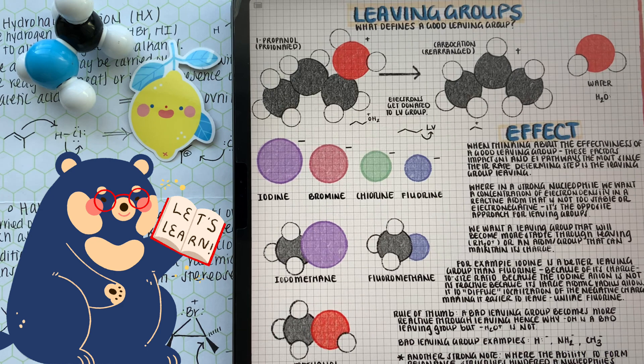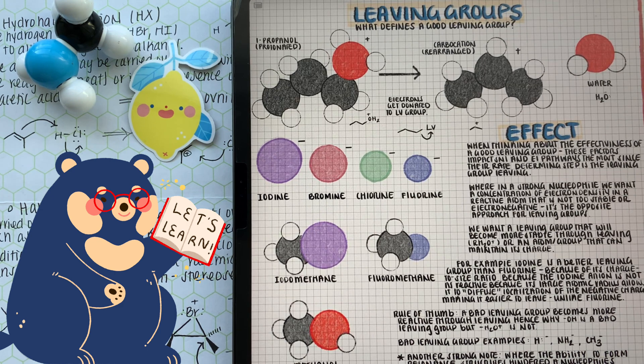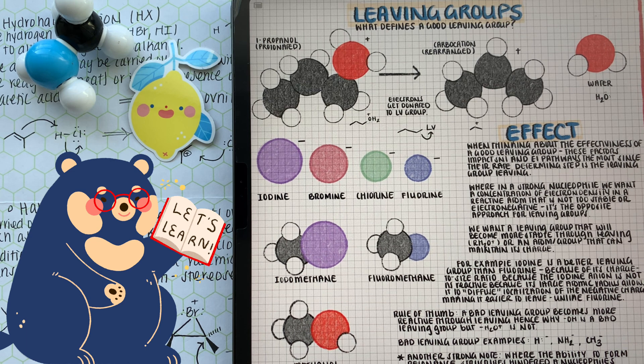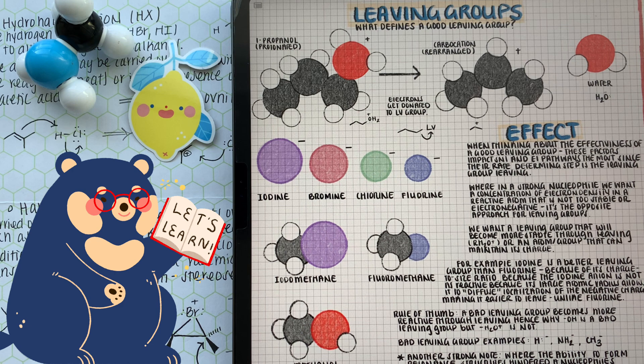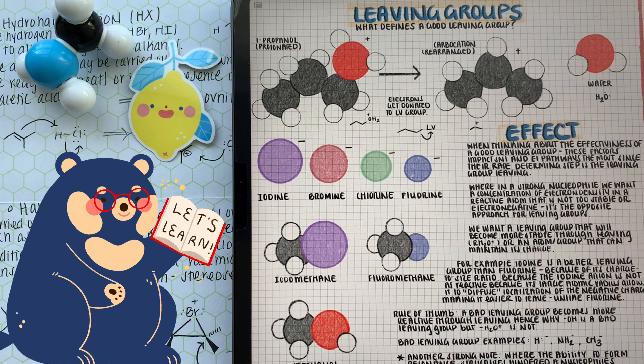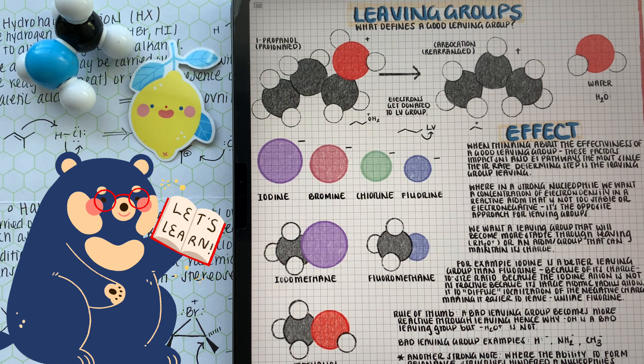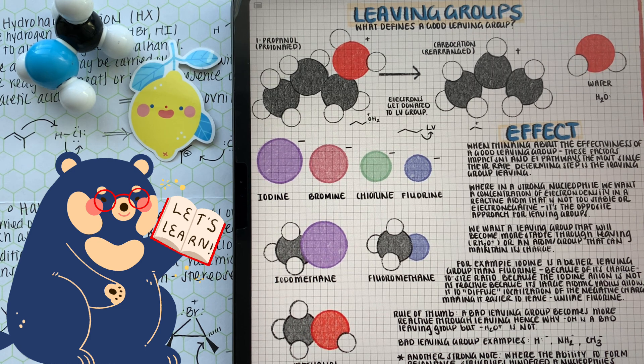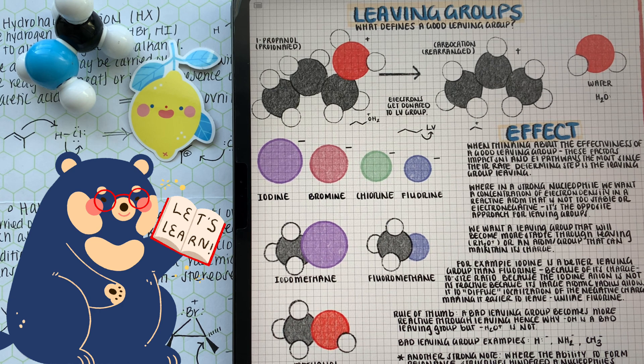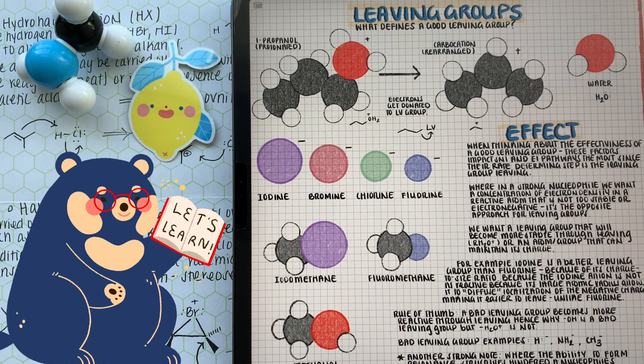You can have one of the strongest nucleophiles. But if we don't have a really good leaving group, the reaction might not occur. A good leaving group is something that once it leaves the molecule, it can handle its negative charge, or it's neutral. For example, a hydroxide is not a good leaving group because it's very reactive. A kind of rule of thumb is a leaving group is bad if it becomes more reactive through leaving the molecule.